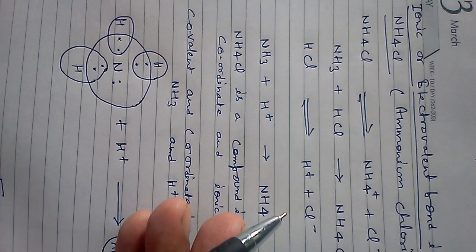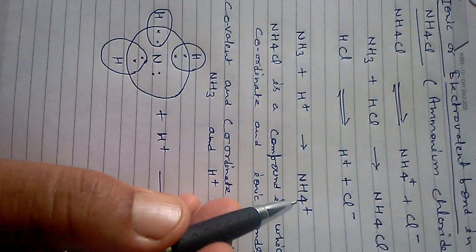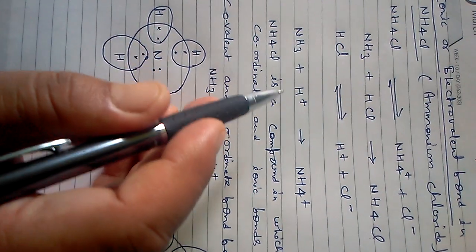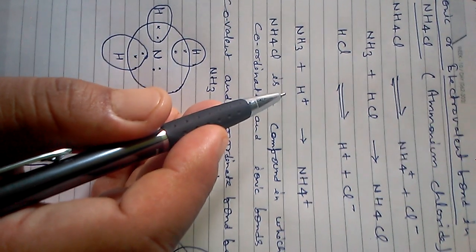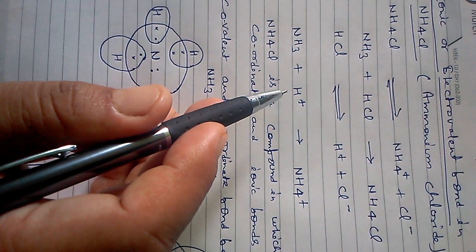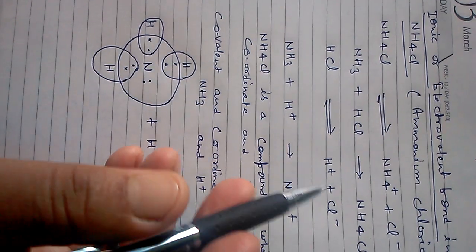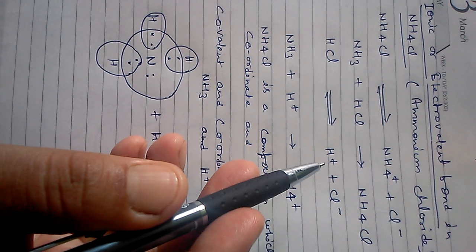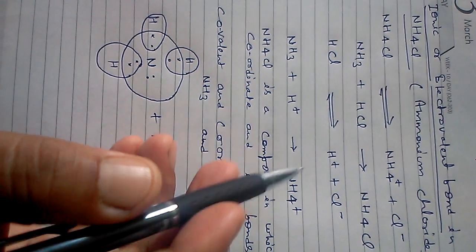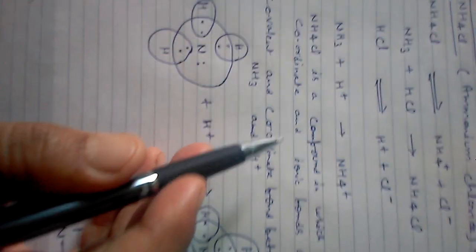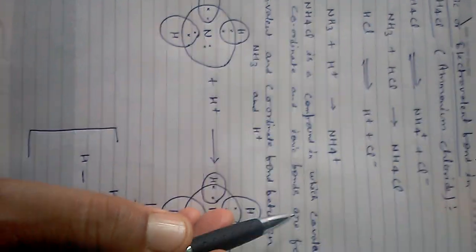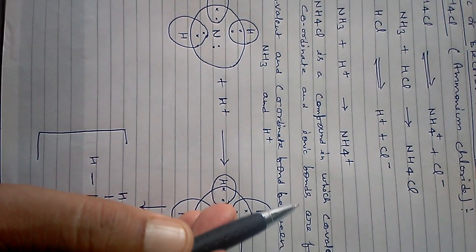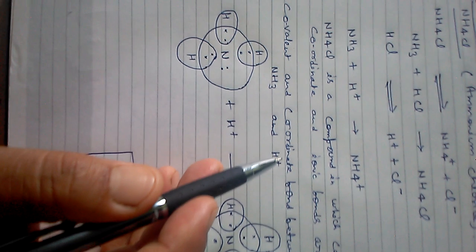NH₄⁺ is formed by the combination of NH₃ and H⁺ ion. This H⁺ comes from HCl — when HCl gives its H⁺ ion, this H⁺ ion combines with NH₃ to form NH₄⁺. NH₄Cl is a compound in which covalent, coordinate, and ionic bonds are all found.